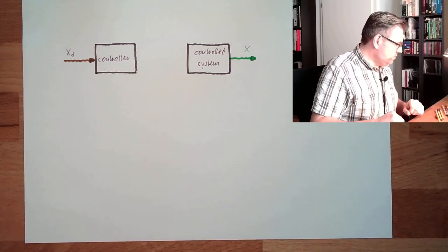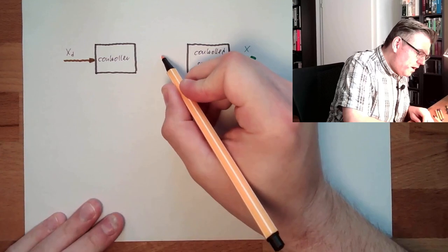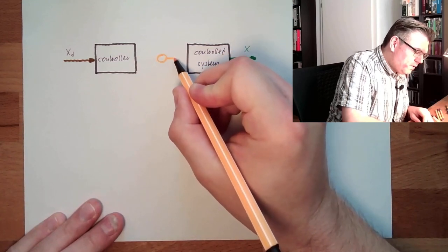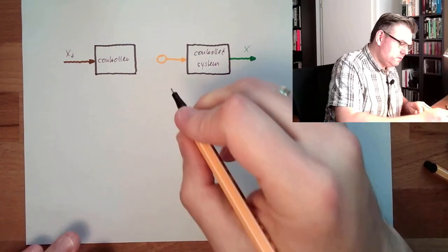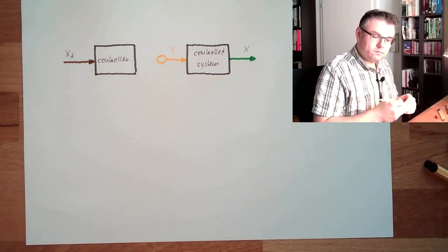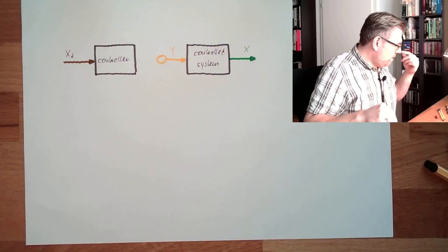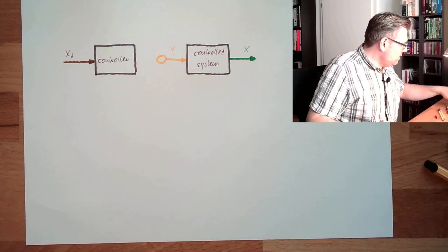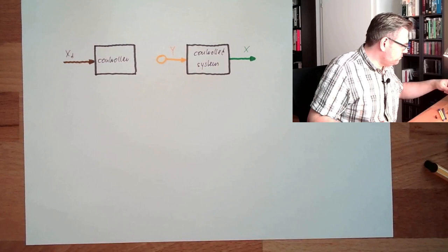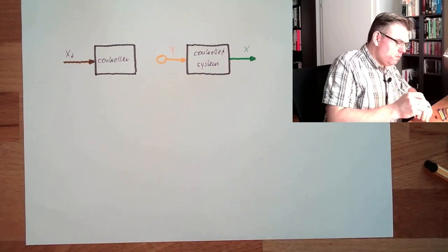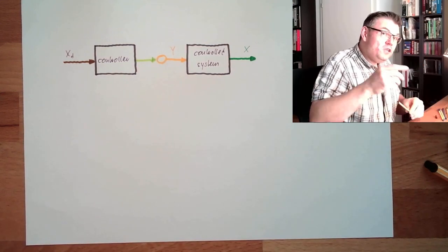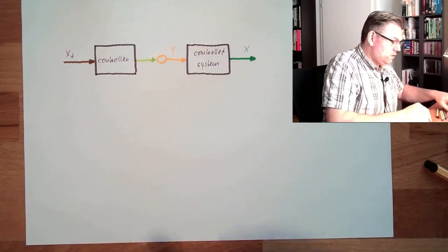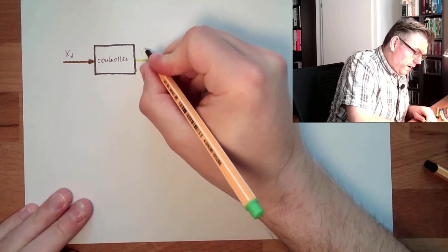However, we also said there is somewhere a control element. And the output of the control element - this is the correcting variable y. The output of the controller might be something else. So the output of the controller, which is influencing the control element, I call it y dash.